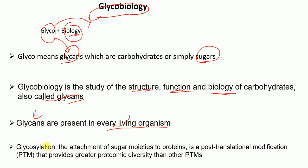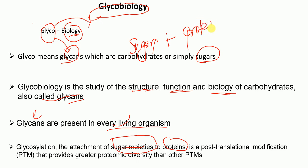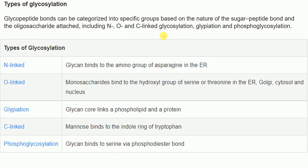What is glycosylation? Glycosylation is a post-translational modification in which sugar moieties are attached to proteins. This attachment of glycan moieties to proteins provides greater proteomic diversity than other post-translational modifications.